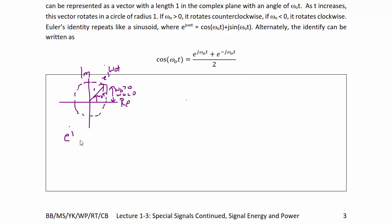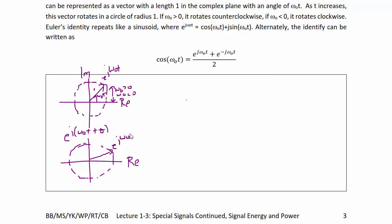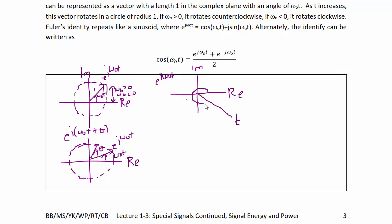Now, what if you have e^(j(ω₀t + θ))? This vector will still rotate with time. If e^(jω₀t) is the original vector, there is an additional angle θ, and it will be this shifted vector that rotates with ω₀t. If we make a three-dimensional sketch with the imaginary axis, real axis, and t coming out, a sketch of e^(jω₀t) would start along the real axis and coil down the time axis.